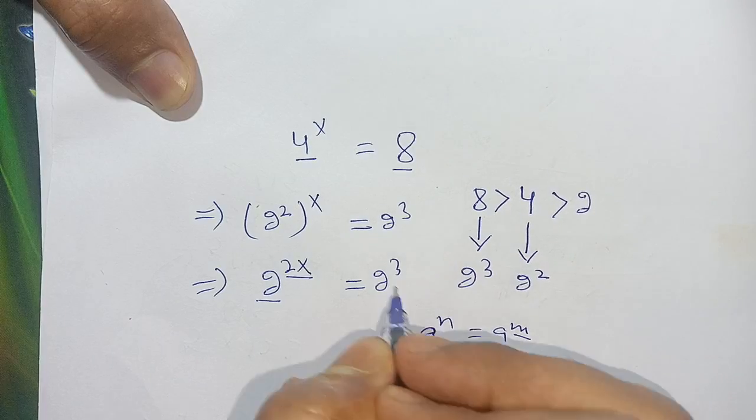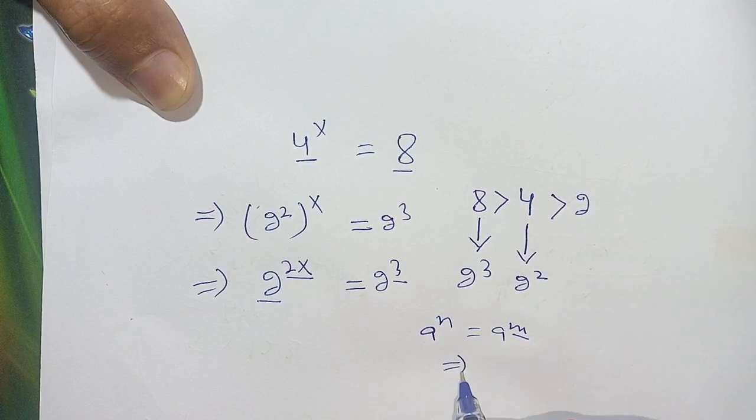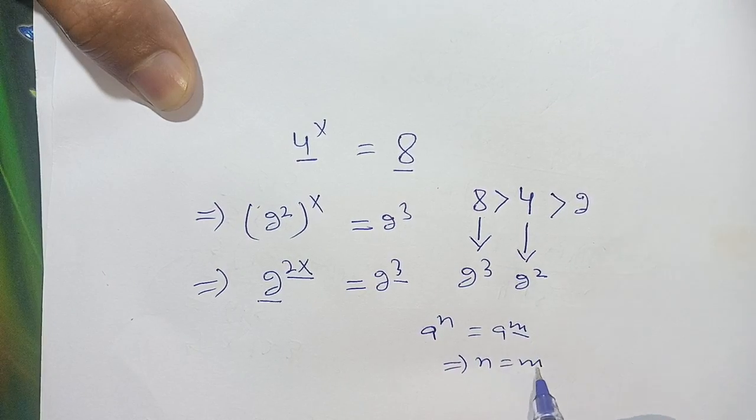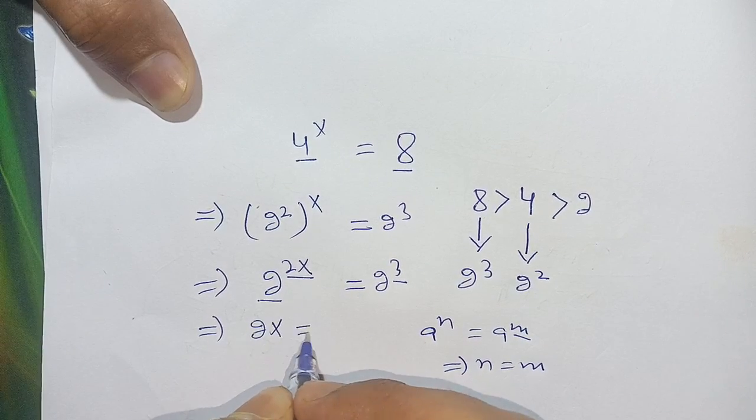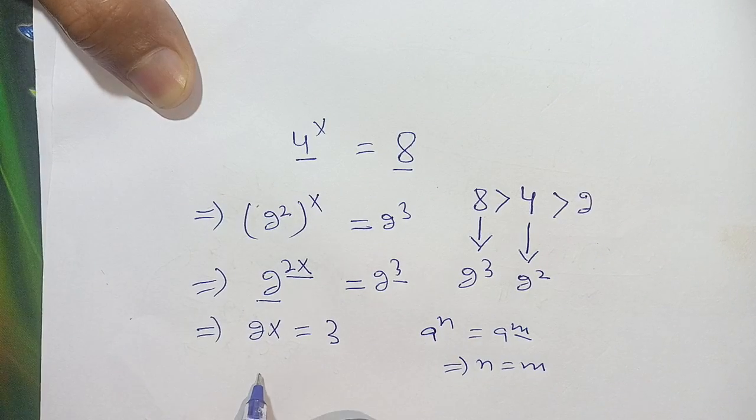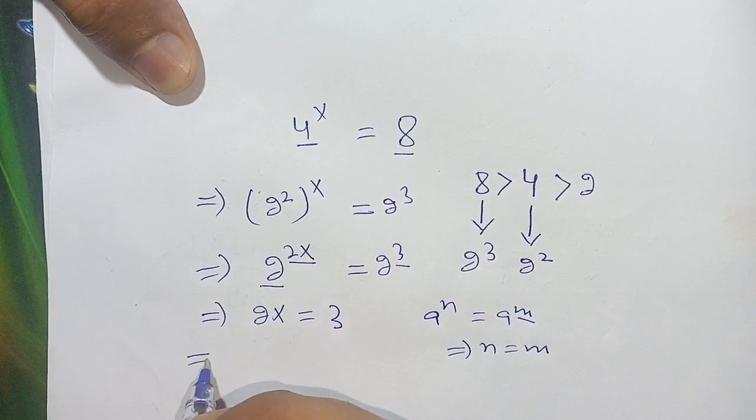Then we compare n = m, which means we can compare the powers. So 2x = 3. In the next step, dividing both sides by 2, we have 2x ÷ 2 = 3 ÷ 2.